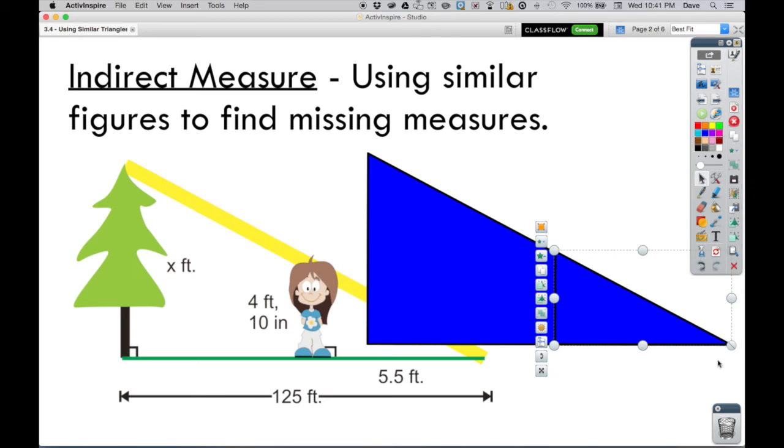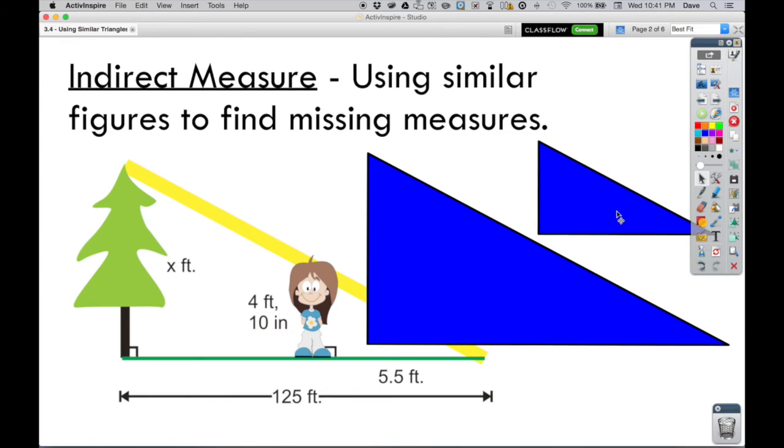And over here these two right-hand corners match up exactly. So because they have the same angles, they must be similar figures. It's that type of idea that is how we're going to use similar figures to find missing measures.